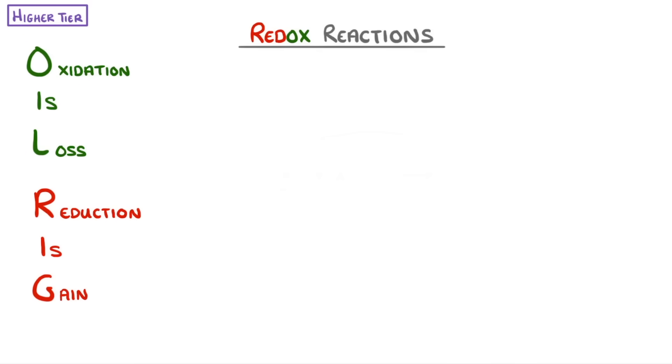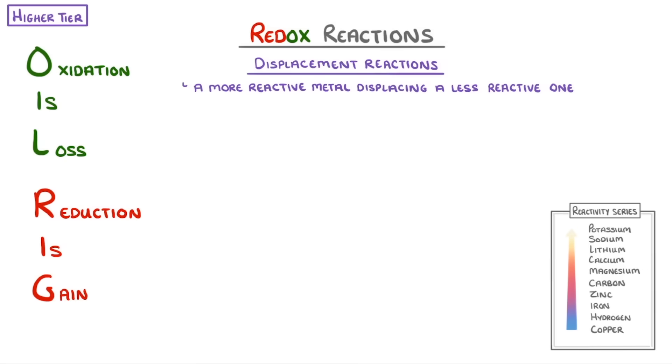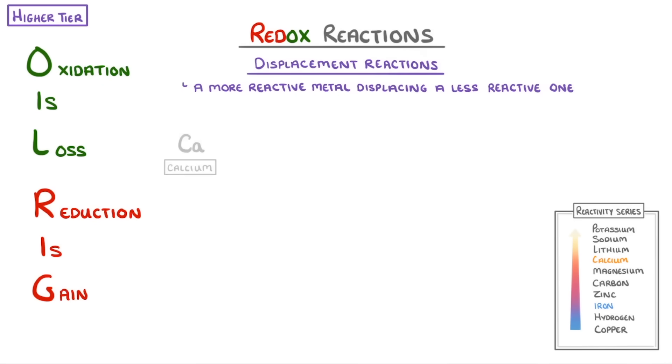Another place we see redox reactions is in displacement reactions, which involve a more reactive metal displacing a less reactive one. For example, if we look at our reactivity series, we can see that calcium is more reactive than iron. So if we added some calcium to a solution of iron sulfate, then the calcium would displace the iron to form calcium sulfate, while the iron would precipitate out as a solid.